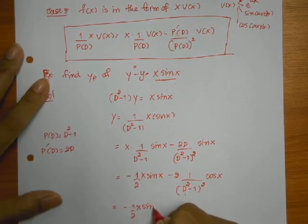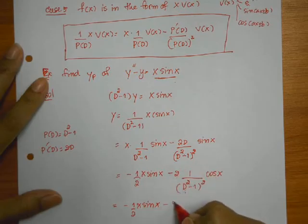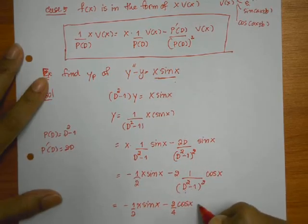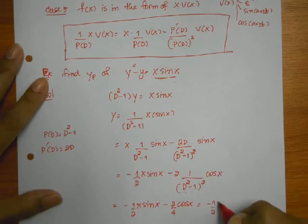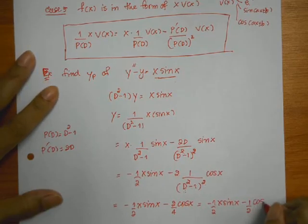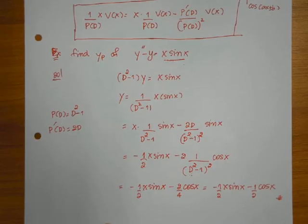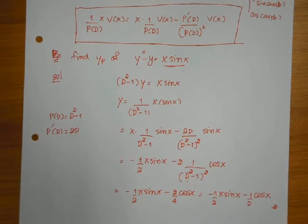But up here you have minus 2. Down there you have plus 4. So it would end up with minus 1 over 2 cos x. So we get minus 1 over 2 cos x.